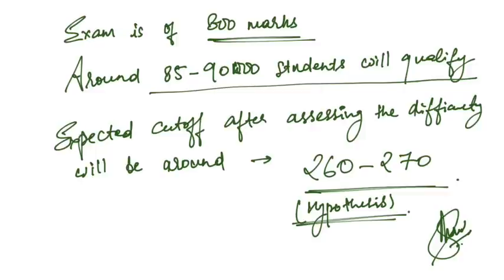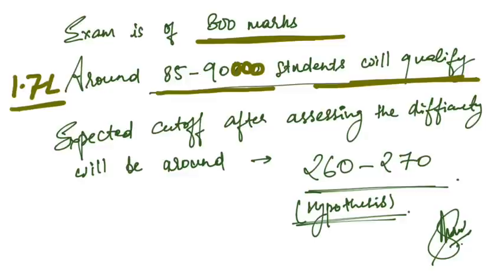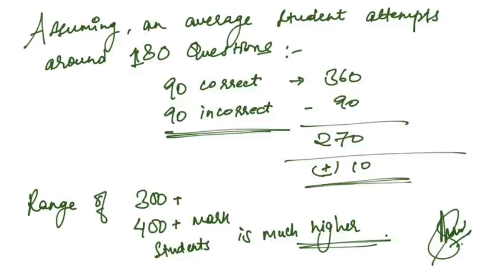The exam is of 800 marks. Around 85 to 90,000 students will qualify because around 1.7 lakh students have appeared. The expected cutoff after assessing the difficulty would be around 260 or 270. This is a hypothesis, but I think 260 to 270 will be the cutoff.